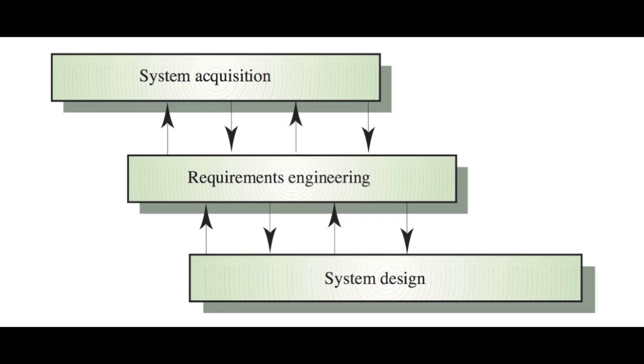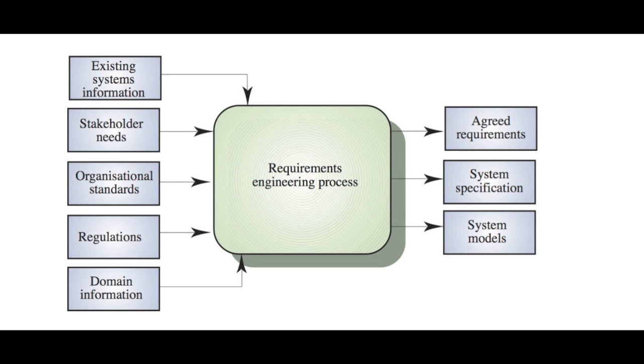Requirements engineering is also something that doesn't stop before we move on to design and implementation. It carries on concurrently with design and implementation. As we design a system we may discover problems with the requirements — inconsistencies and issues — so there's a constant exchange of information between the design and implementation activity and the requirements engineering activity. This is an input-output view of the requirements engineering process that shows what goes into that process and what we get out.